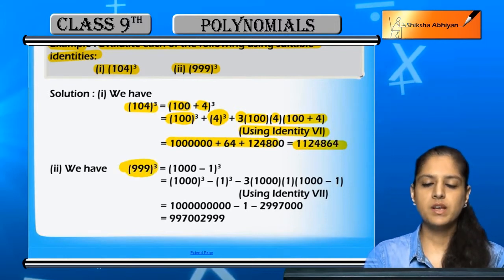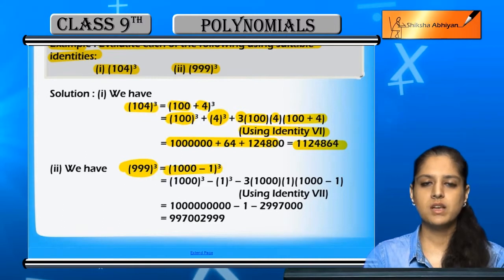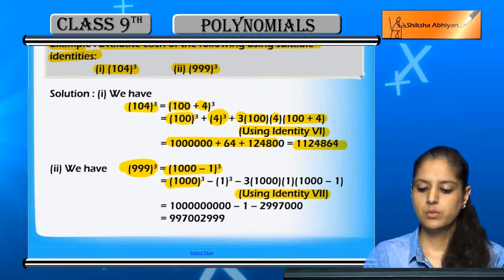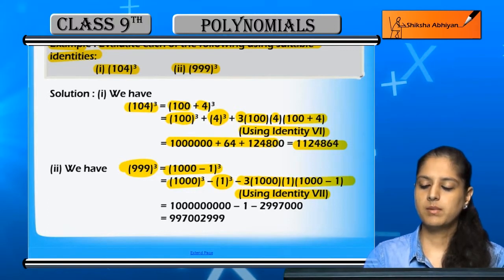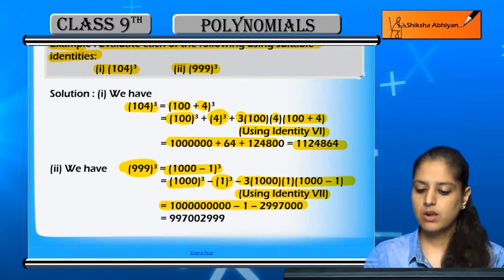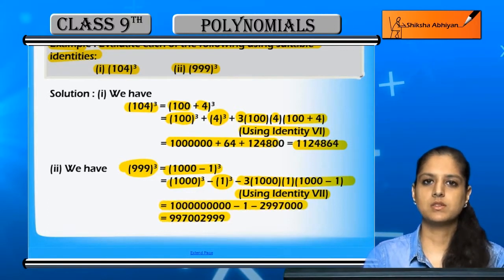If we look at 999 cube, it is 1000 minus 1 whole cube. This is x³ - y³ identity, which is x cube minus y cube minus 3 times x times y times (x - y). Using this formula: (1000)³ - (1)³ - 3(1000)(1)(1000-1) = 1000000000 - 1 - 2997000 = 997002999.